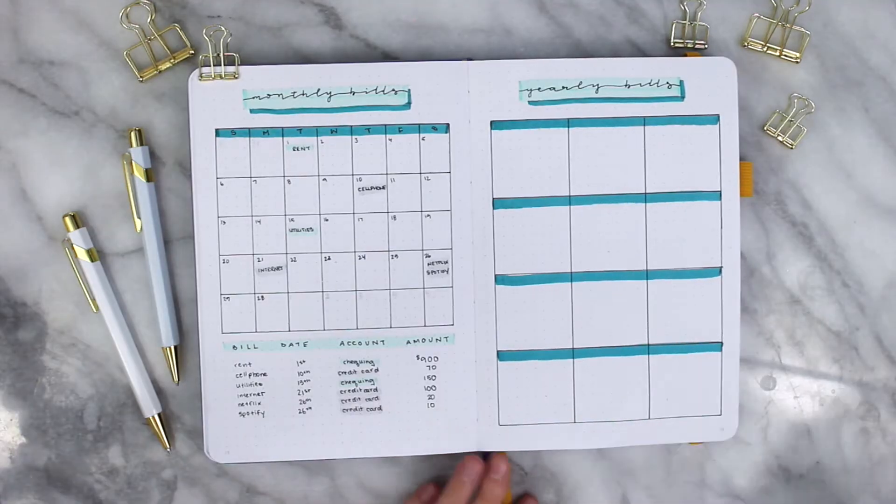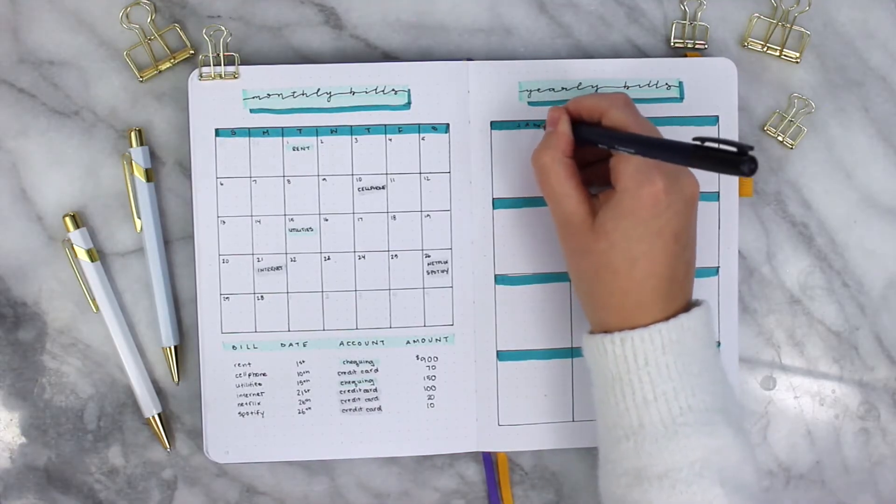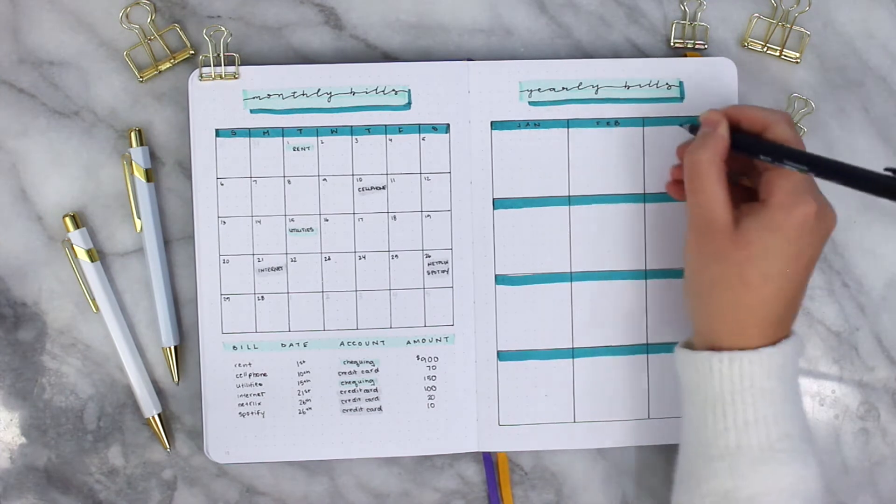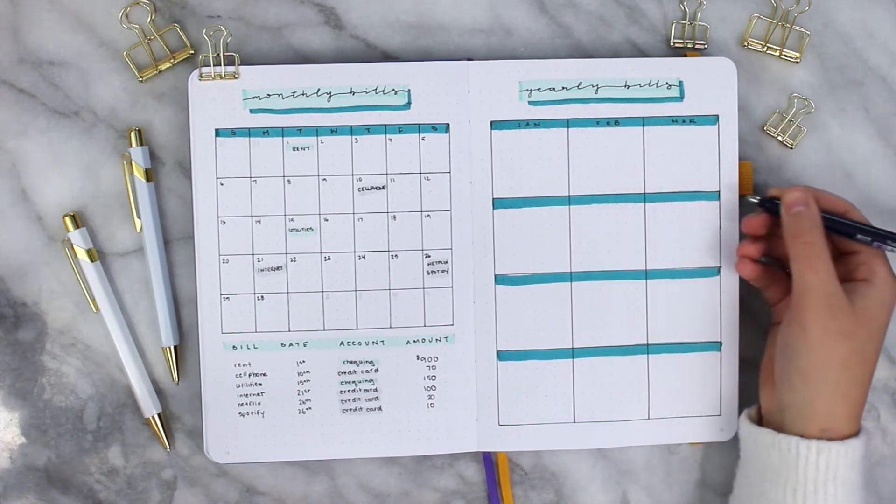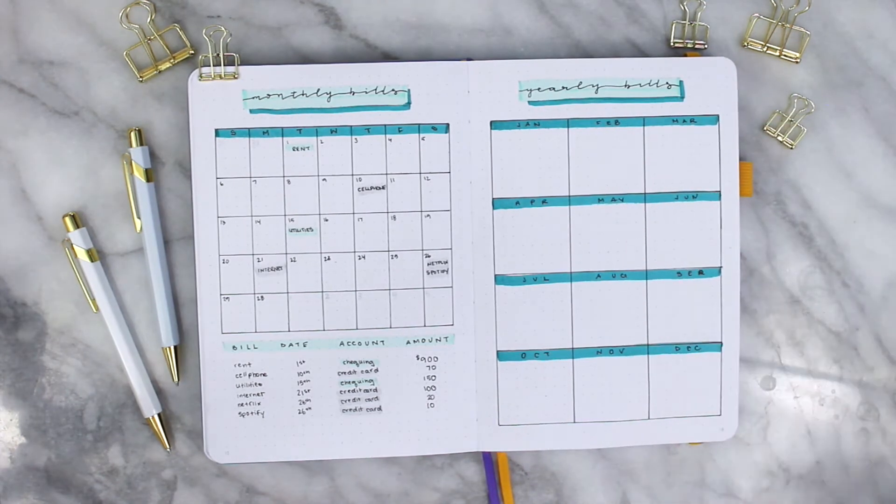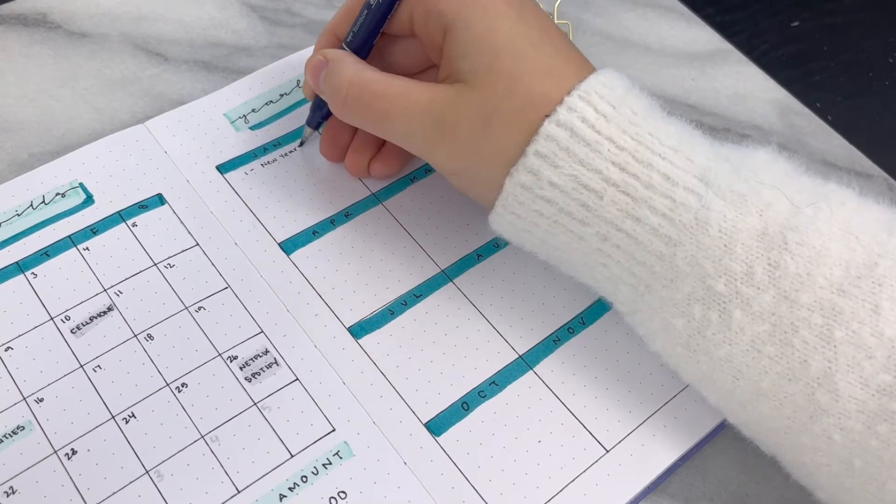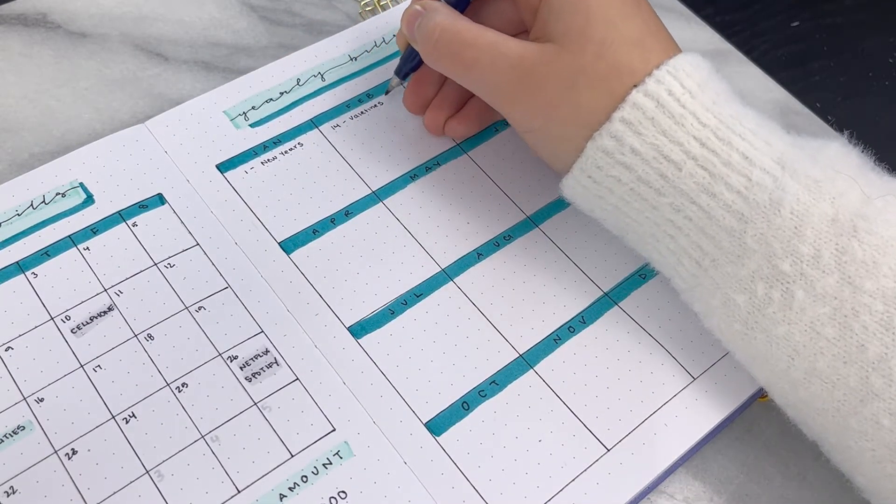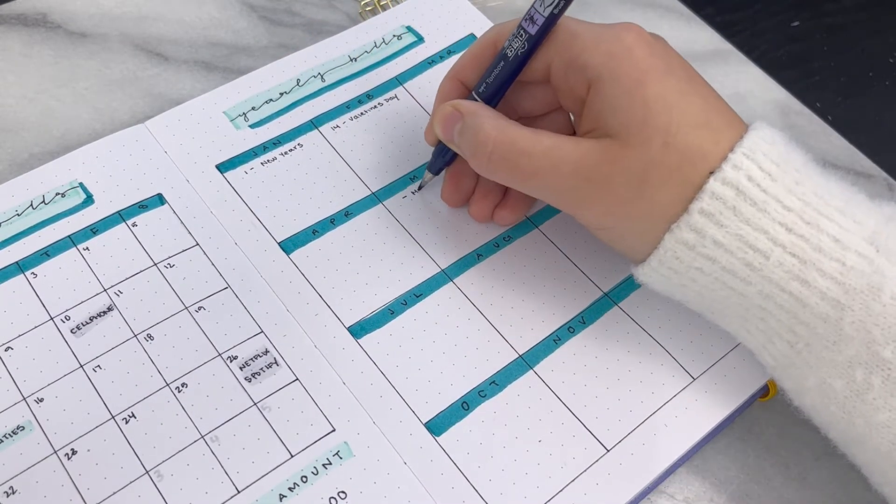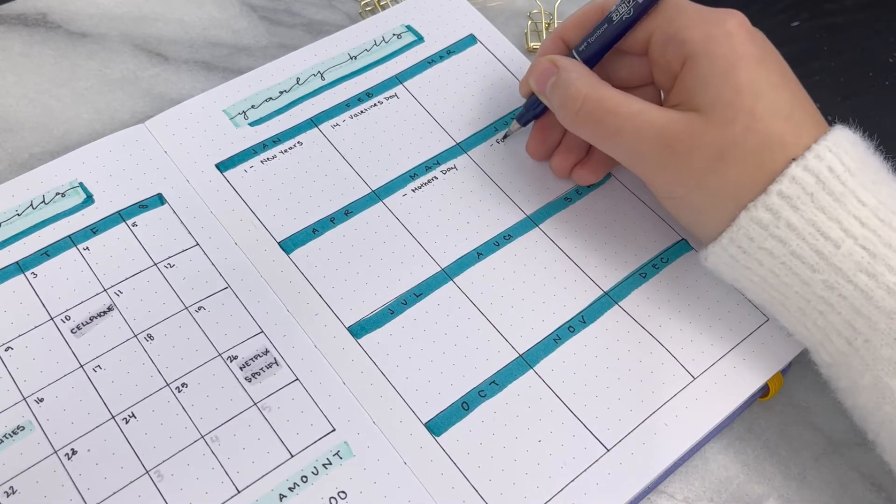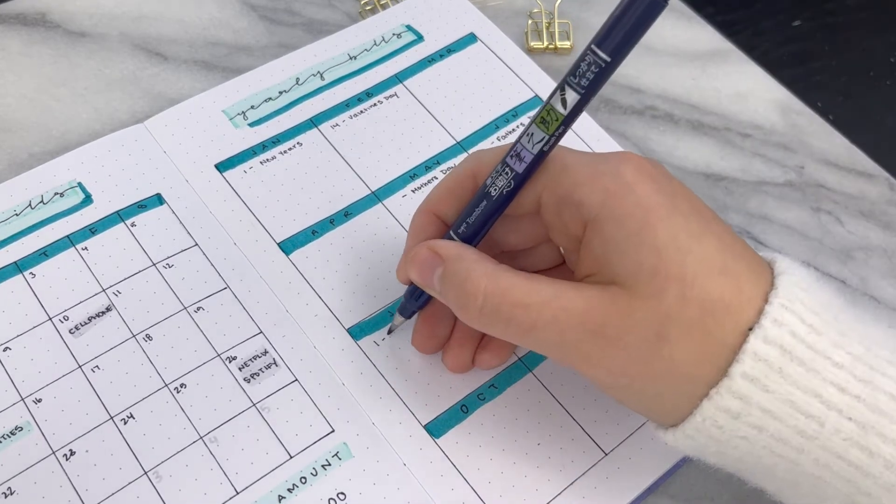I broke the page down into 12 different boxes, one to represent every single month. Here's where I'm going to be putting in all of the events that go through the year. Things like New Year's or Valentine's Day, maybe Mother's Day, Father's Day, whatever you end up paying for for different events.